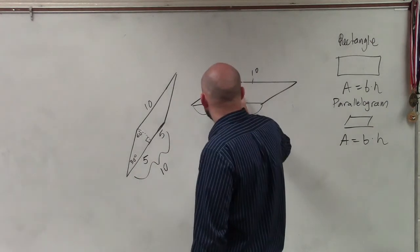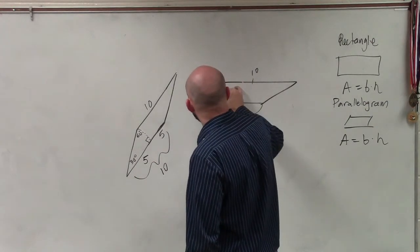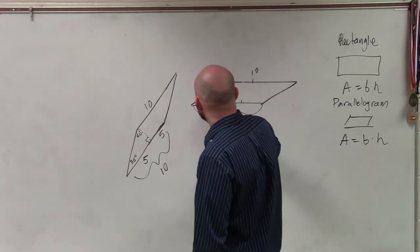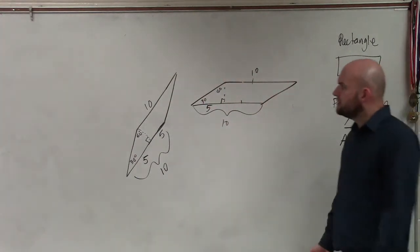Now, it says we have a right angle, but that's a 30, and that's a 60, and they say this distance is 5. Okay?